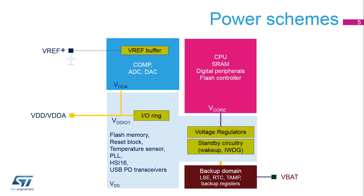In addition, VDD supplies the standby circuitry which includes the wake-up logic and independent watchdog. VDD supplies voltage regulators which provide the V-Core supply. V-Core supplies most of the digital peripherals, SRAMs, and flash controller. VDD-A voltage is the same as the VDD one and supplies the analog peripherals.